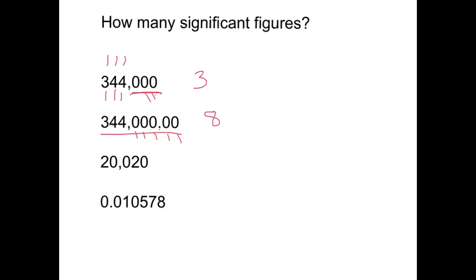In 20,020, I have two non-zero digits, two zeros that come between non-zero digits (which are significant), and one terminal zero with no decimal place (which is not significant) — giving four significant digits. In the final example with 0.0 leading zeros and four non-zero digits, one zero between two non-zero digits is significant, while two leading zeros are not — giving five significant digits.